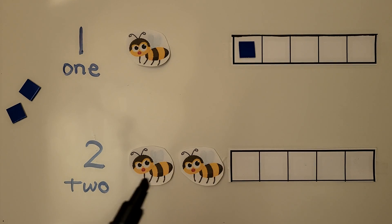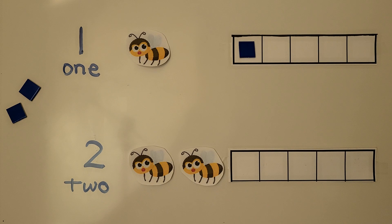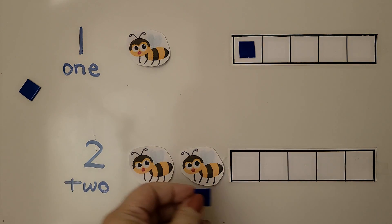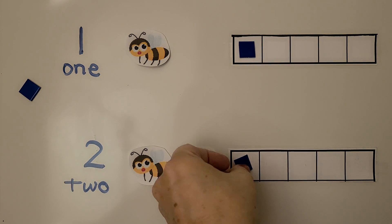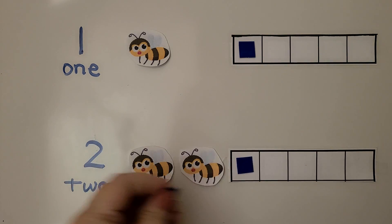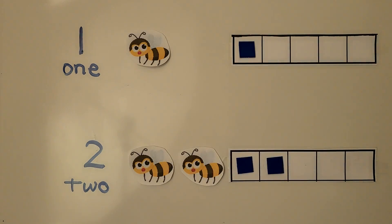Here we have two bumblebees. This is the number 2. This is the word 2. We can take two counters and put them into the 5-frame to represent the bumblebees. That's one. That's two. One, two. Two counters for two bumblebees.